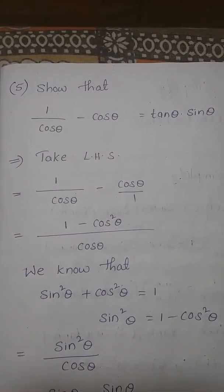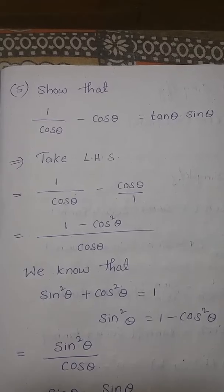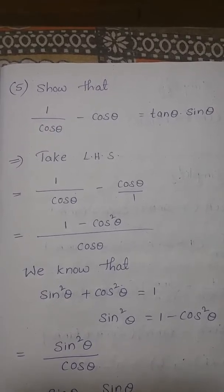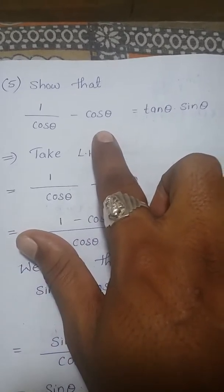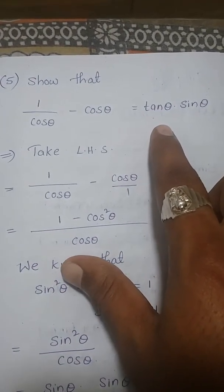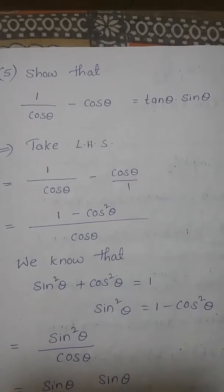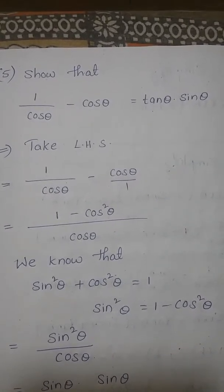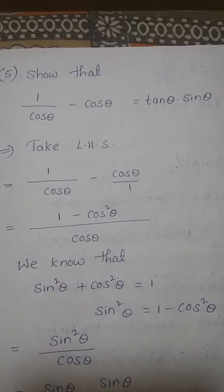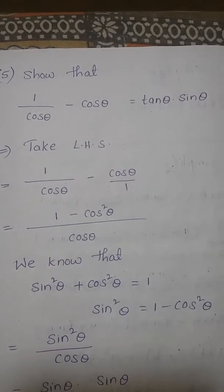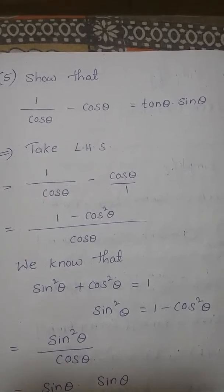Question number 5, page number 292, trigonometry exercise 11.4. The question is: show that 1/cosθ − cosθ is equal to tanθ · sinθ. So we have to show that 1/cosθ − cosθ equals tanθ · sinθ. To show this, first we take the left hand side.